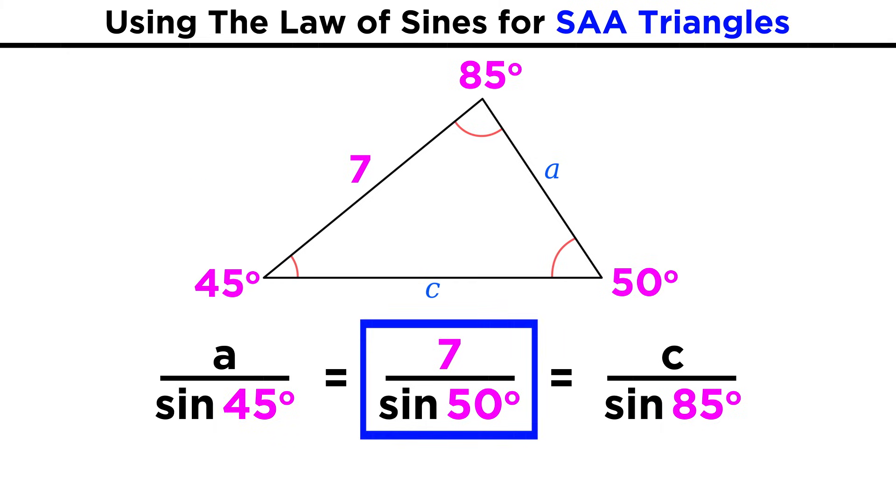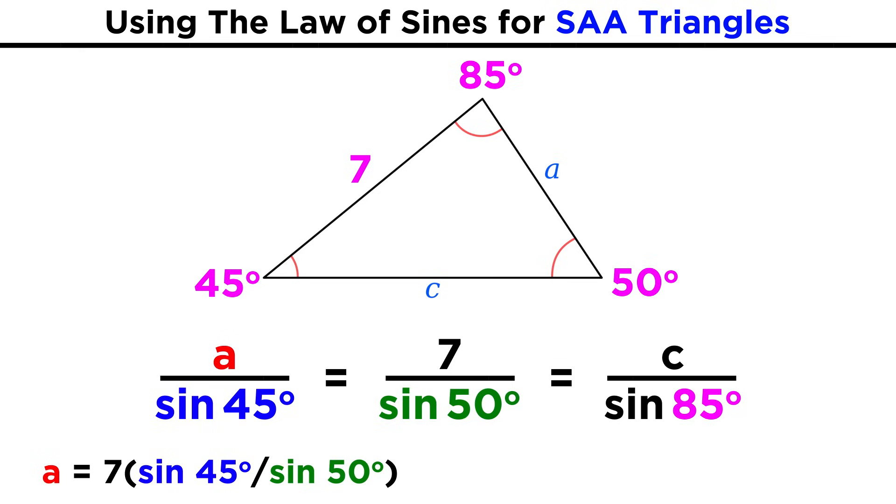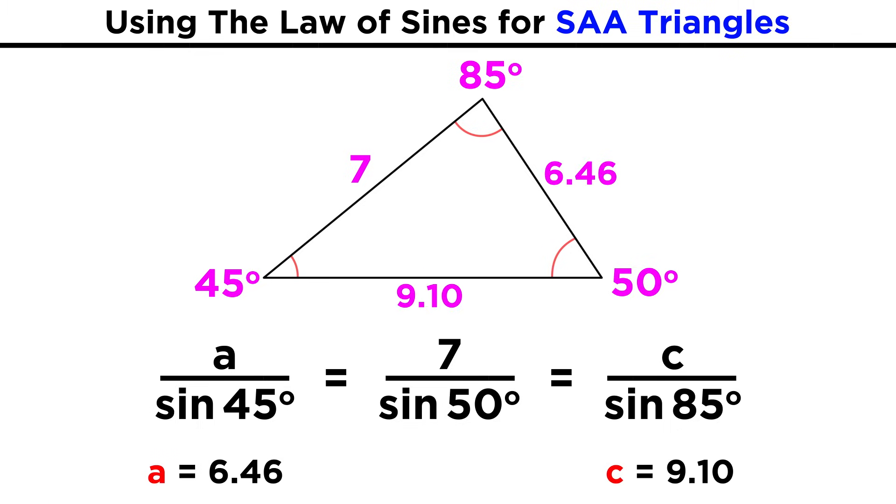Now we have one angle-side pair, so we can use its ratio to get the other two sides. Here's one relationship. We just bring this angle up over here and then evaluate. To get the third side, here's the other relationship, and we just do the same thing. When we use this technique, we will usually measure angles in degrees and just plug things into a calculator to get approximate side lengths.